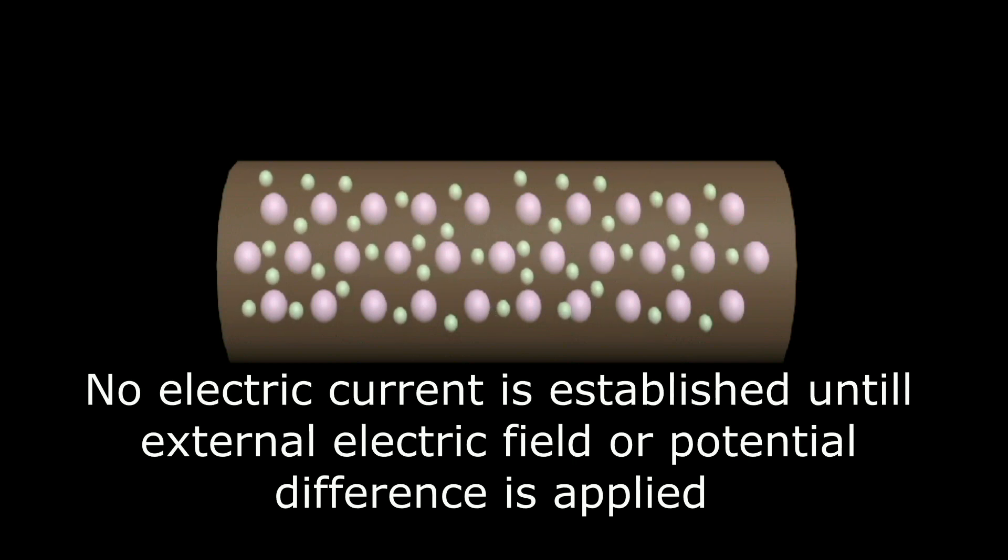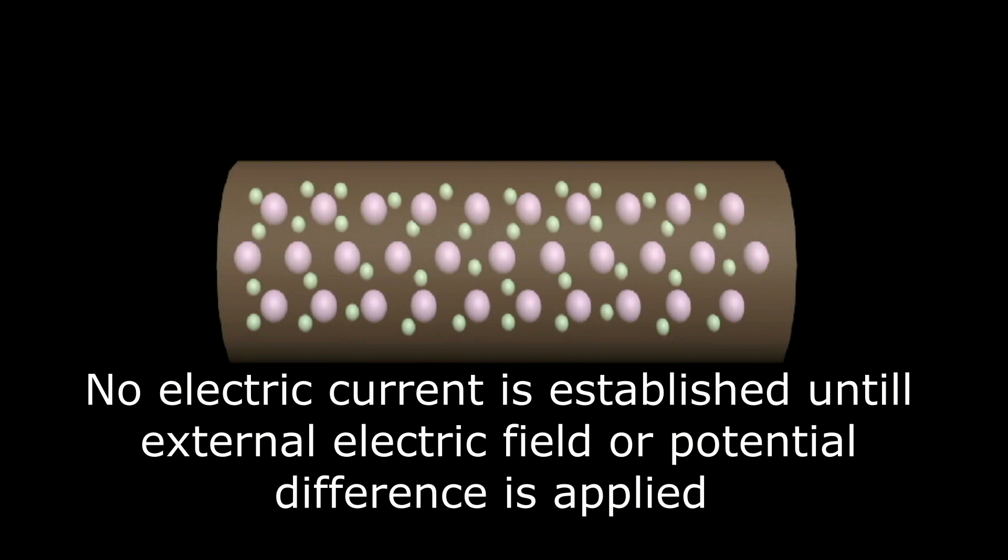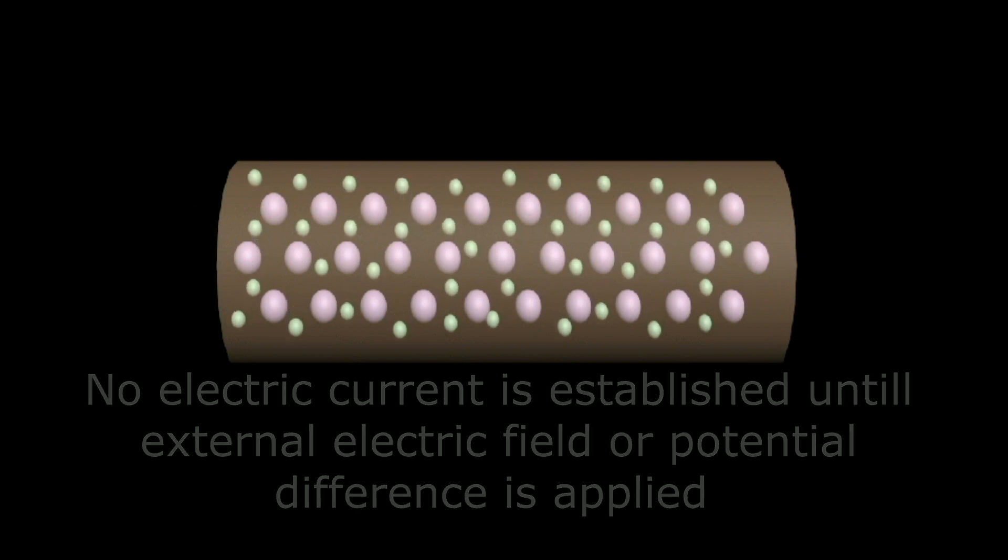Due to random motion of all free electrons, there is no net flow of charges in any particular direction. Consequently, no current is established in the conductor.